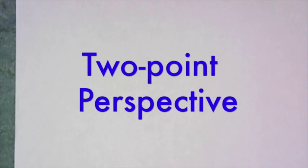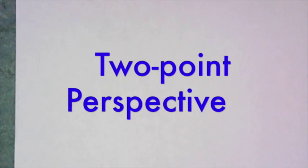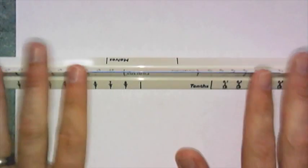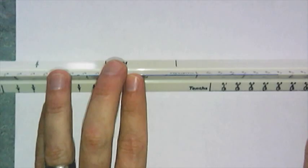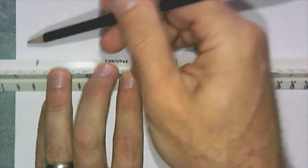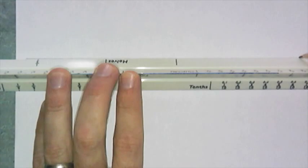Now that we understand one point perspective, let's add another vanishing point. This is going to make things a little bit easier and a little bit more lifelike.